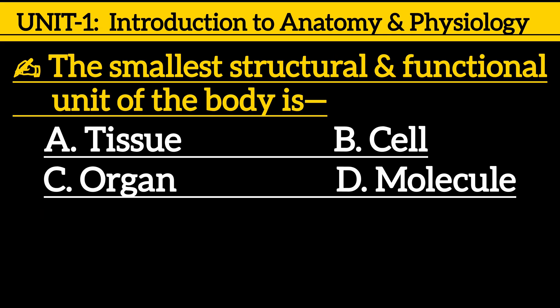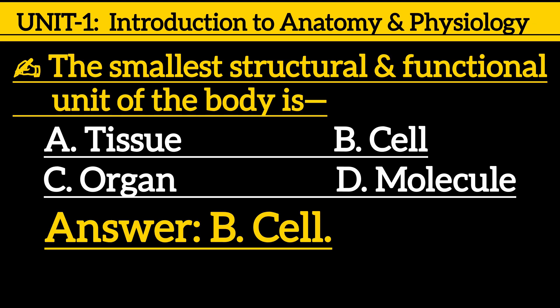Next one: The smallest structural and functional unit of the body is — option A: tissue, option B: cell, option C: organ, option D: molecule. The correct answer is option B: cell.